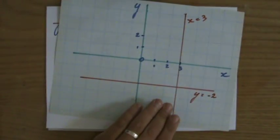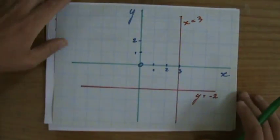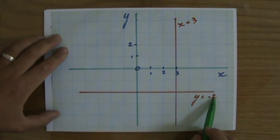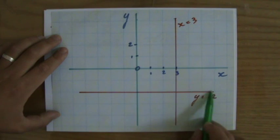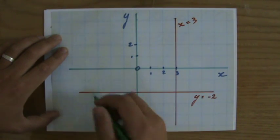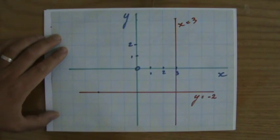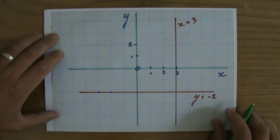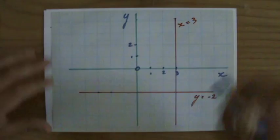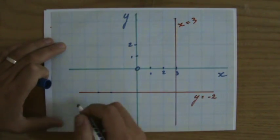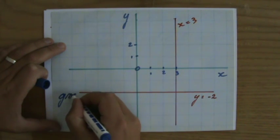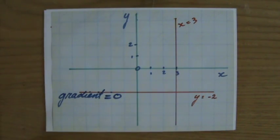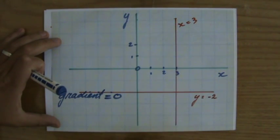But how does that work for horizontal and vertical lines? If I take any coordinate on my horizontal line — let's do that one first — it's the line y equals minus two, where the y coordinate is minus two everywhere you go. If I stand here on my line and I go one step to the right, how many steps do I go up or down to be back on my line? Zero steps. So the gradient for a horizontal line is zero, because you go zero steps up or down.